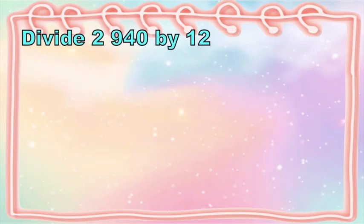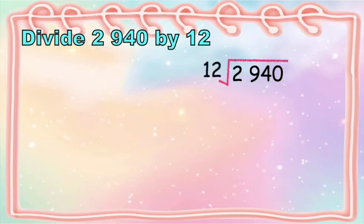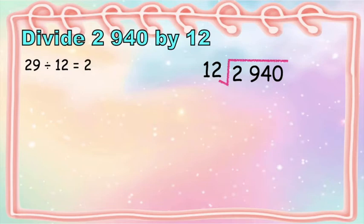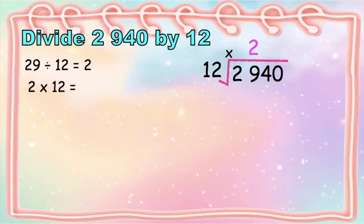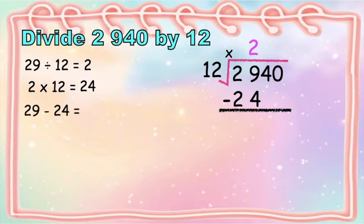How about if you have this? Divide 2,940 by 12. We are going to write it this way: 2940 divided by 12. As you can see, children, our divisor is a two-digit number, so we are going to divide 29 and 12 first. 29 divided by 12 is equal to 2. Write 2 at the top of digit 9, since we used the two-digit portion of our dividend. Then multiply: 2 times 12 is equal to 24. Write 24 at the bottom of 29. Then subtract: 29 minus 24 is equal to 5. Write 5 here. Then bring down 4.